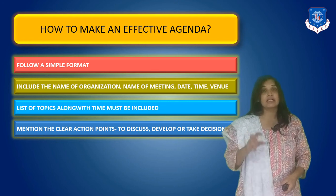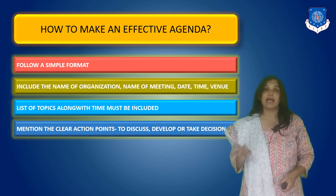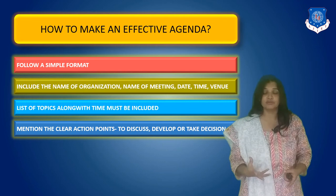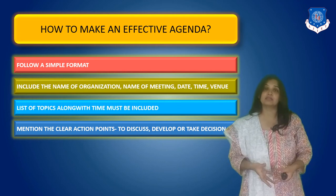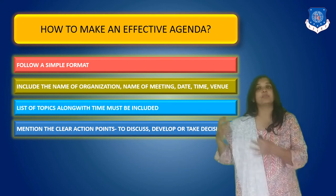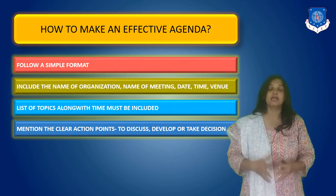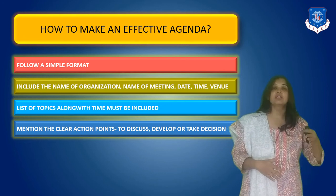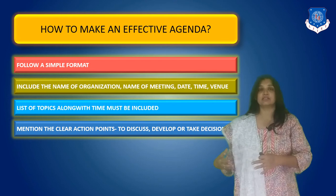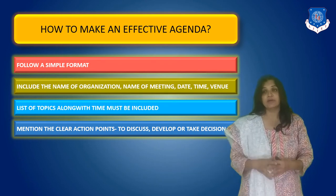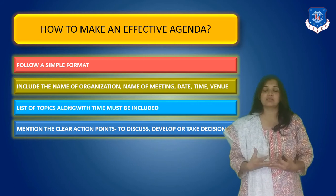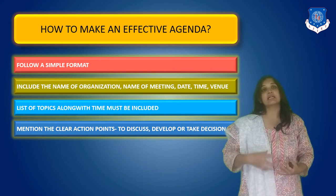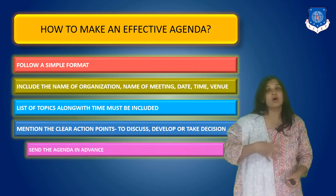Next, you should mention clear action points — meaning, is the meeting only for discussion and sharing of ideas, or are you trying to develop something new, or do you want to come to a particular decision? What is the action point to be implemented in the meeting? That is very important. A discussion is a separate thing and coming to a decision is a separate thing. When you discuss to come to a decision there is an end result, but when you only want to discuss there may only be sharing of ideas. If you have clear action points, the convener will know how to go about the discussion.